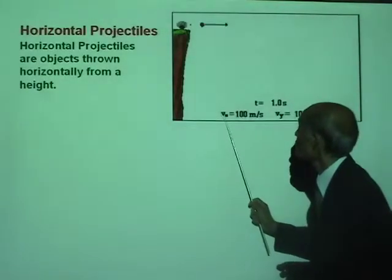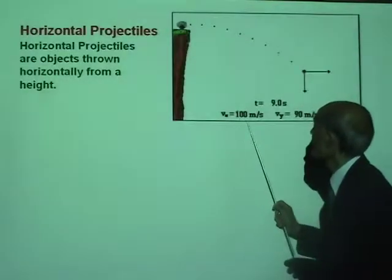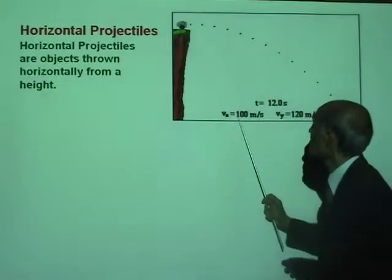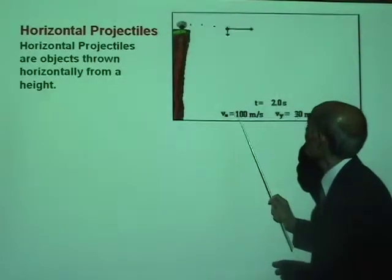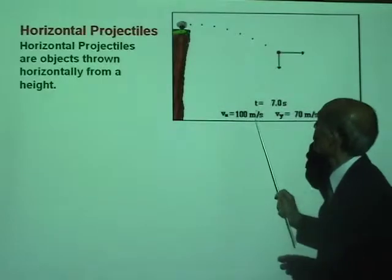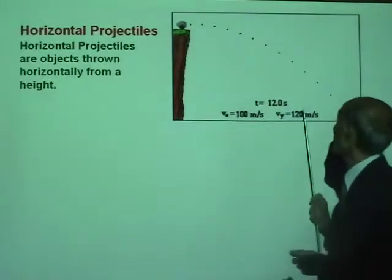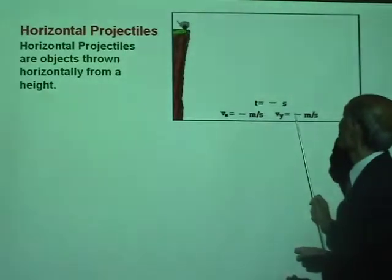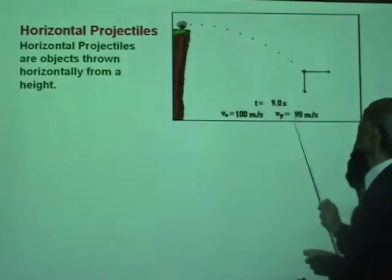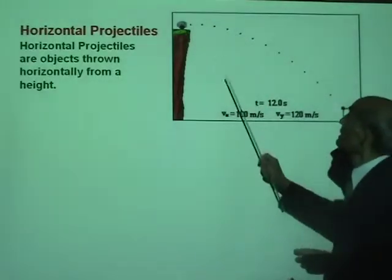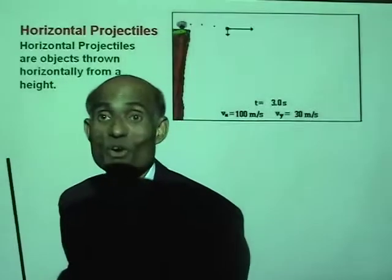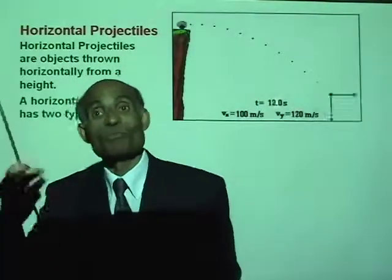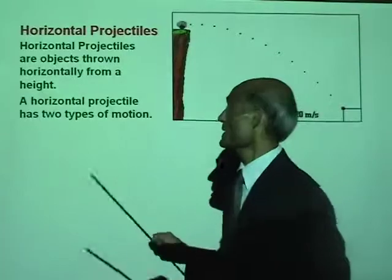The horizontal velocity is 100 meters per second and does not change — the moment it is projected, that remains constant. But the vertical velocity keeps increasing: 10, 20, 30, 40, 100, 120 — because the net force vertically increases its speed.